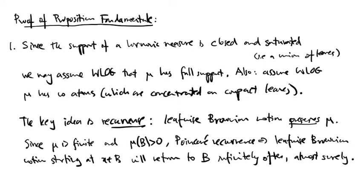The key idea is that of recurrence. Leafwise Brownian motion on the compact space lambda preserves the finite measure mu. Since the measure of B is positive, Poincaré recurrence implies that leafwise Brownian motion starting at any point x in B will return to B infinitely often, almost surely.